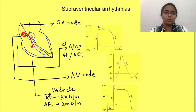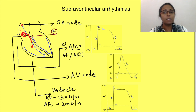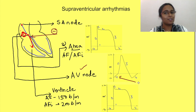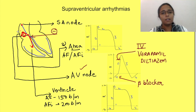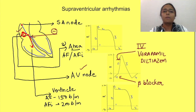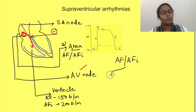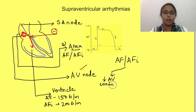To treat these arrhythmias, you need to decrease the number of impulses being conducted to the ventricles by acting on the AV node, which has the action potential of pacemaker cells. Class 2 drugs (beta blockers) and class 4 drugs (calcium channel blockers) such as verapamil and diltiazem may be used. The arrhythmia itself is not terminated, but impulses won't be conducted to the ventricles, preventing deterioration of heart function despite continued increased impulse generation.